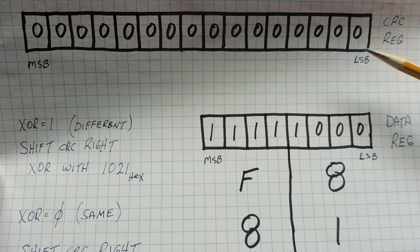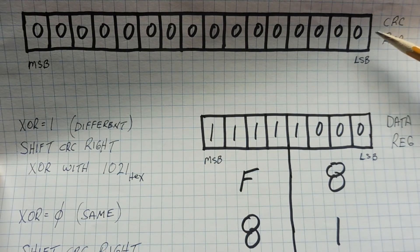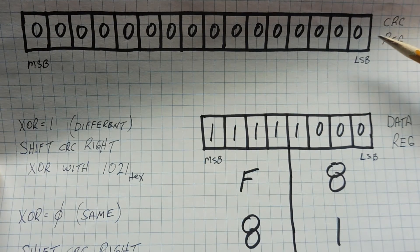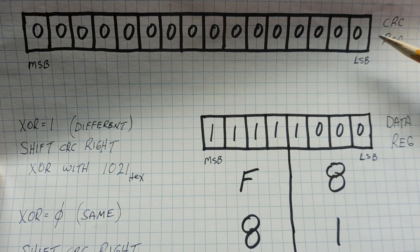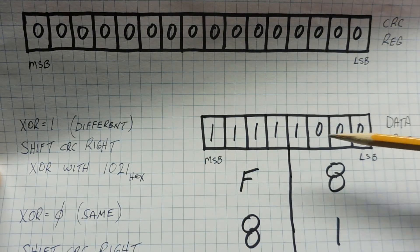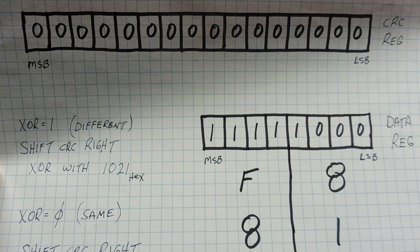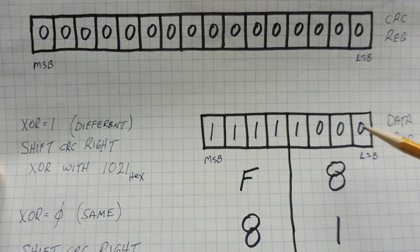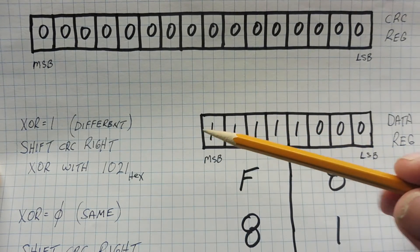And if they're different, we do a shift right of the CRC, and exclusive OR it with 1021 hex, and put that value back into the CRC register. And if they're the same, then we just do a shift CRC right. And we do that for the whole 8 bits of the data register.